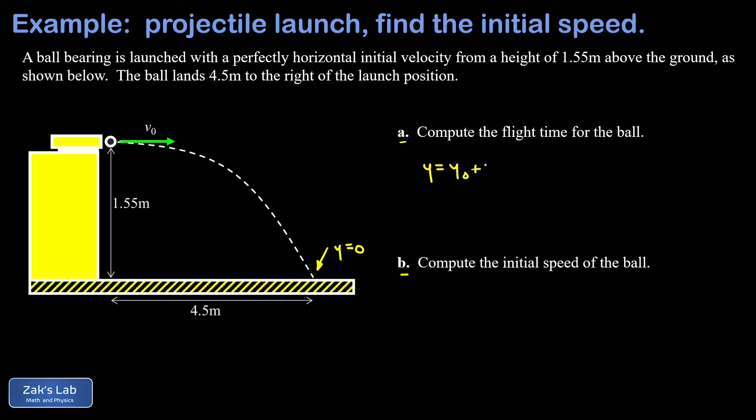That's Y equals Y naught plus V naught Yt minus one-half GT squared, where G is the acceleration induced by gravity. So that has a magnitude of about 9.8 meters per second squared. Now our final Y coordinate here is zero, so that's gone. And our initial Y velocity, that's also zero because I had a horizontal launch at the beginning.